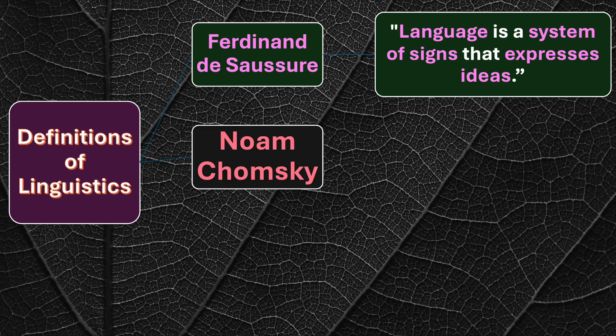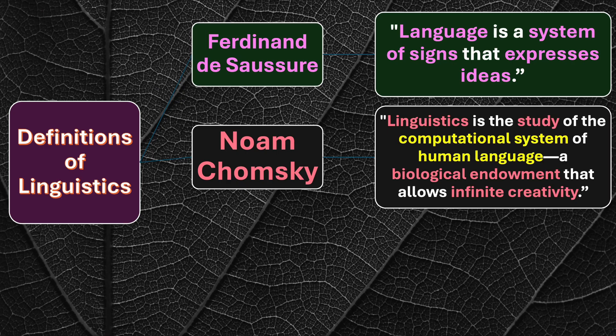Moving on to the next definition, given by Noam Chomsky. He says linguistics is the study of the computational system of human language — a biological endowment that allows infinite creativity. Three phrases are important to understand this definition: computational system of human language, biological endowment, and infinite creativity.